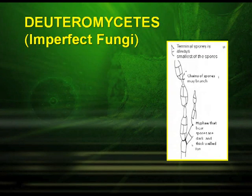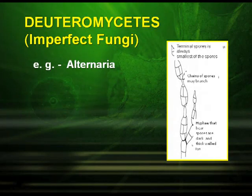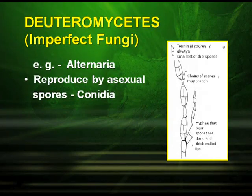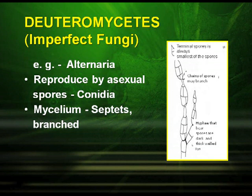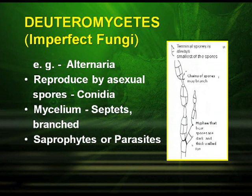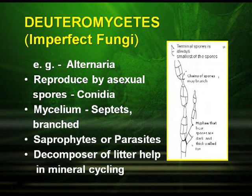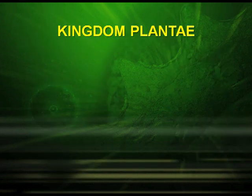Deuteromycetes are also known as imperfect fungi — example, Alternaria. They reproduce by asexual spores called conidia. Their mycelium is septate and branched. They may be saprophytes or parasites. They are the decomposers of litter and help in mineral cycling.